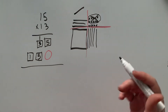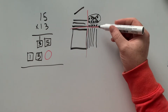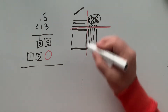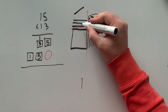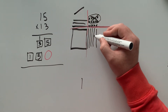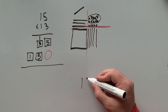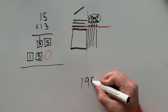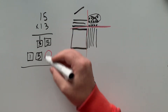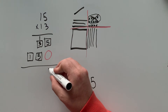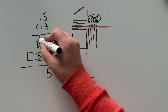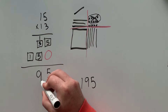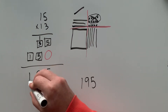So again, we can either count the ones: there's 100, and one, two, three, four, five, six, seven, eight, nine 10s and five ones. Or we can add it together over here: 5 plus 0 is 5, 10 plus 30 is 40, plus 50 is 90, 100.